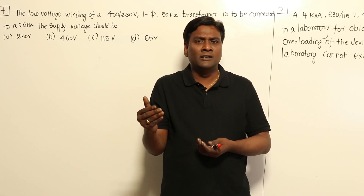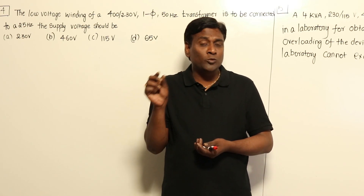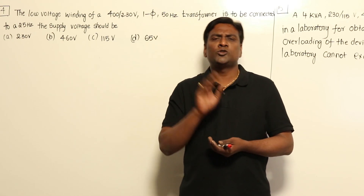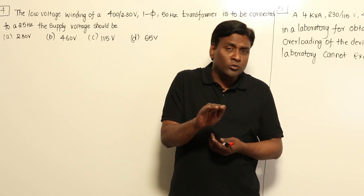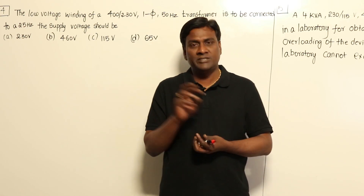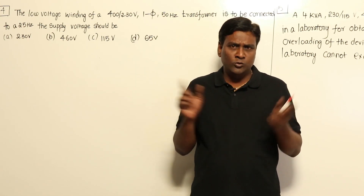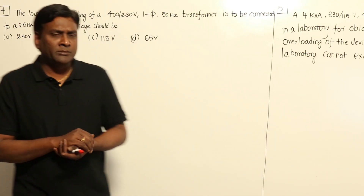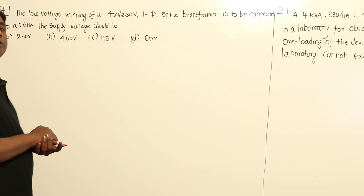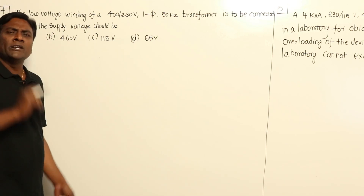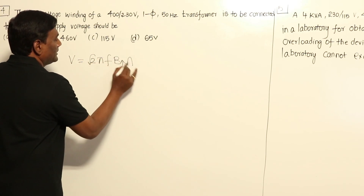I have taken two problems now. In one problem I will show that flux density should be constant — as discussed in previous videos, flux density is not a term to play with, so flux density should not be varied. Now, this is an old GATE question. The low-voltage winding of a 400/230V, single-phase, 50Hz transformer is to be connected to a 25Hz supply. The question asks what the supply voltage should be. The equation we derived is: V = √2 · π · f · Bmax · Ac · N.